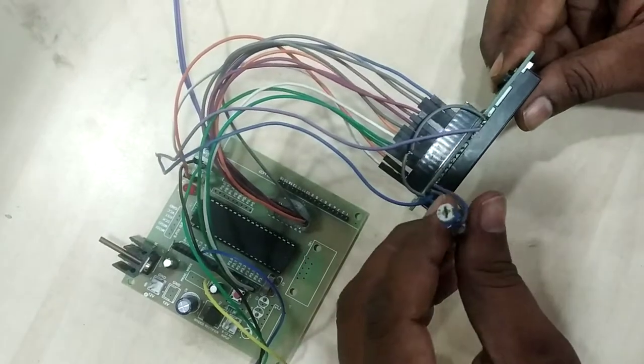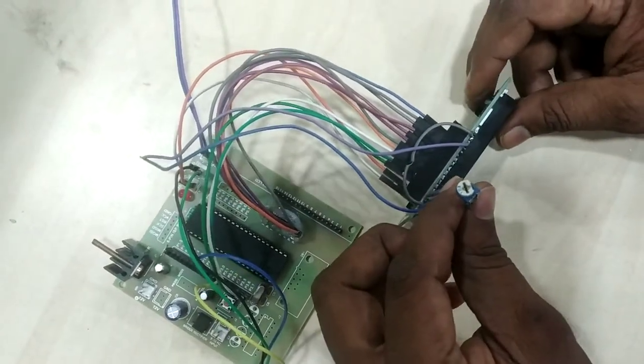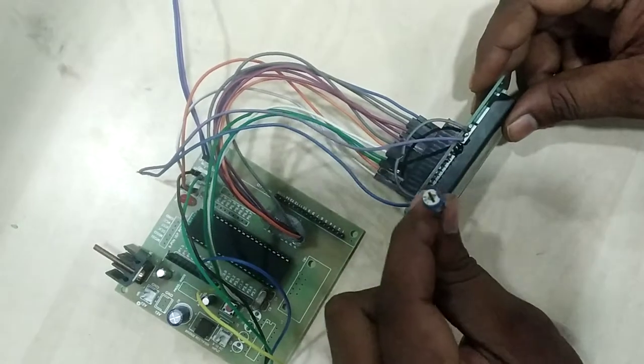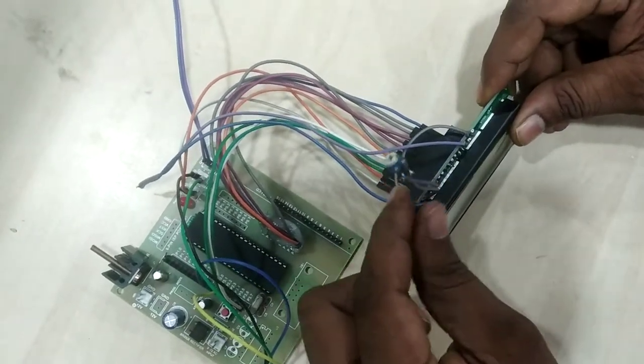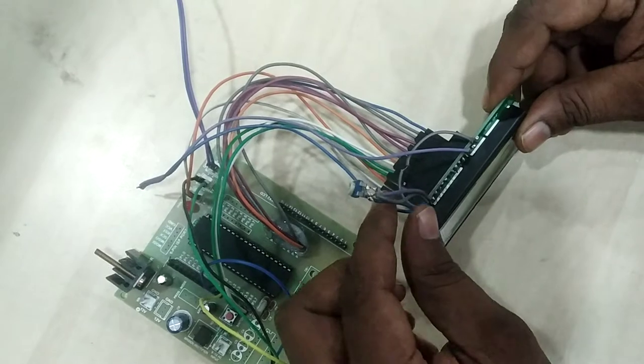And the third pin - if you are looking to adjust the contrast, you need to connect one variable resistor. I just given external variable resistor connection across third pin.